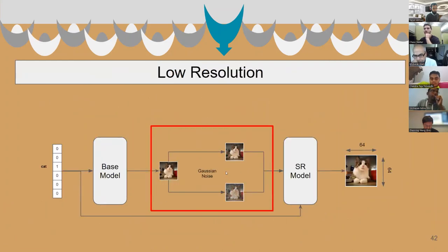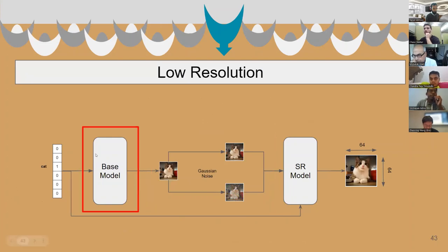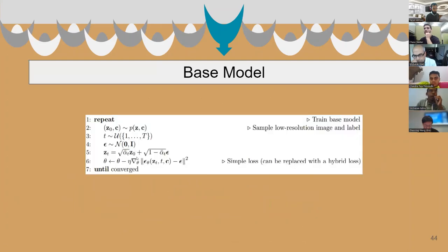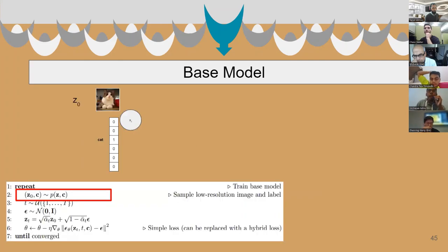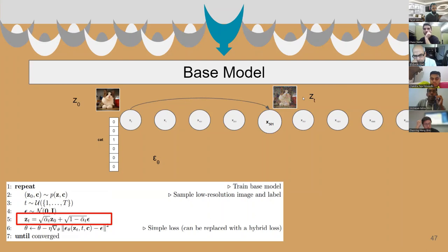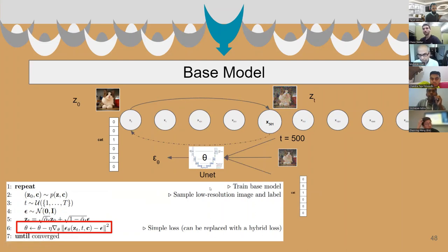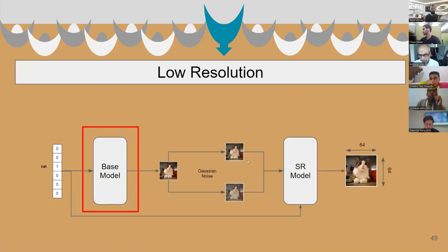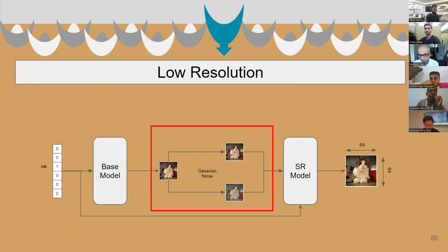We figured out how this portion works. Now let's check how the base model works. This is the algorithm — it's just a class-conditioned, classifier-free diffusion process. First we sample a class and the original image. We pick a random time step and create the noisy version using the forward process equation. Then finally we use our UNet model to predict the noise added, and we repeat this until the loss converges.